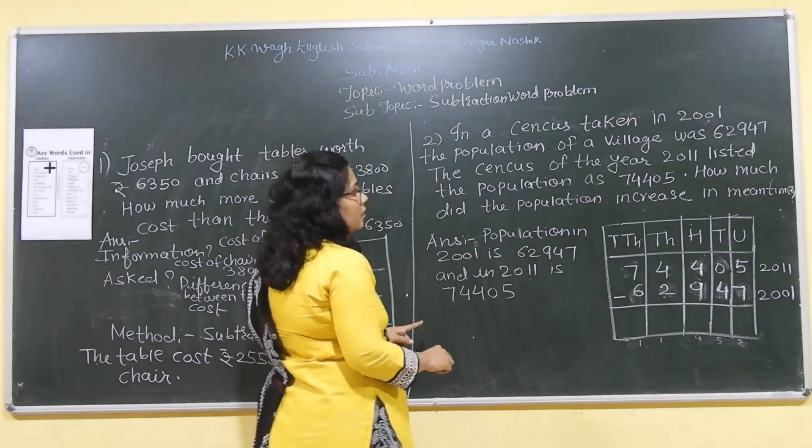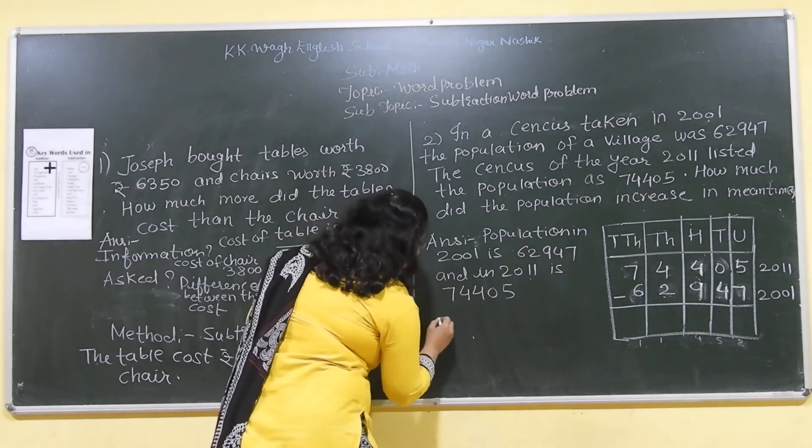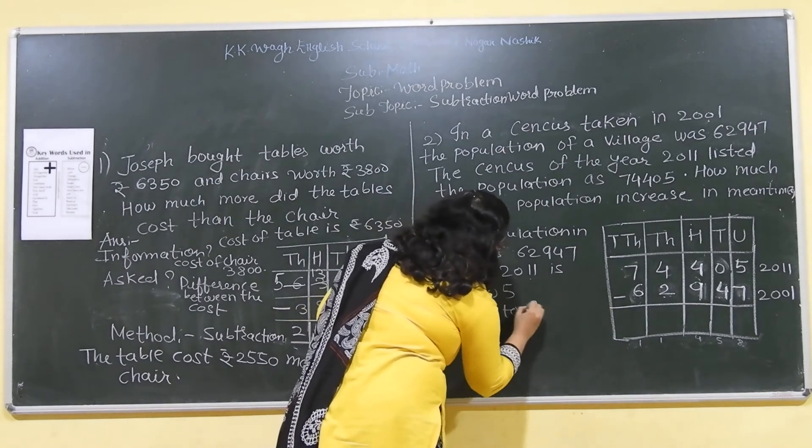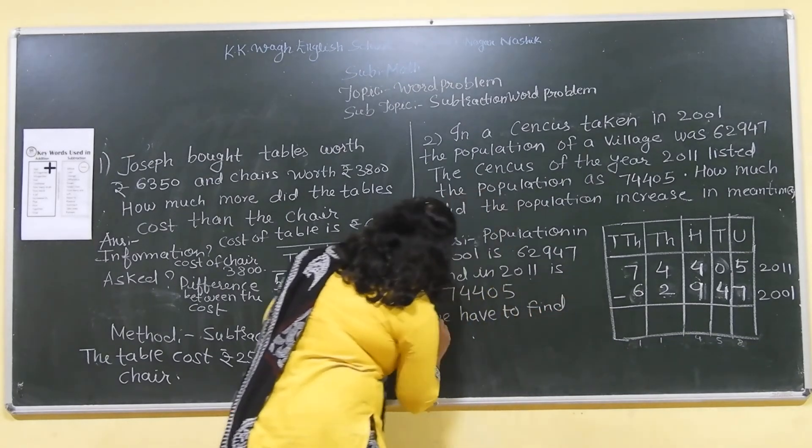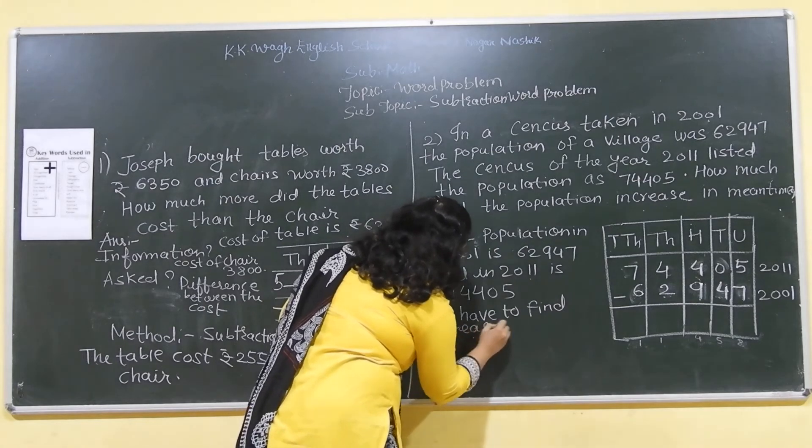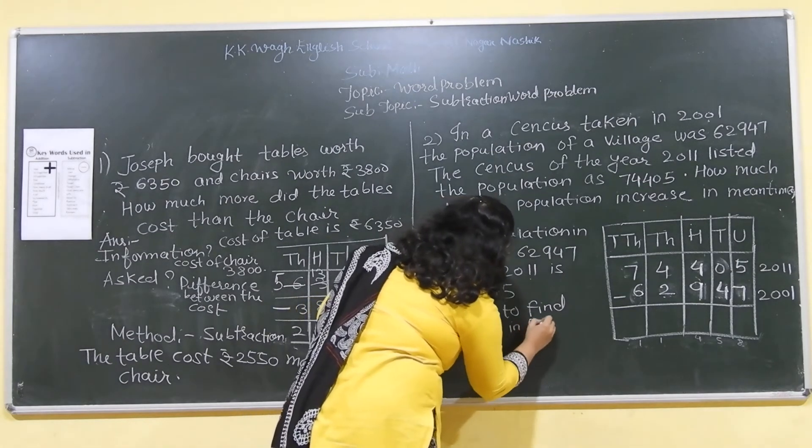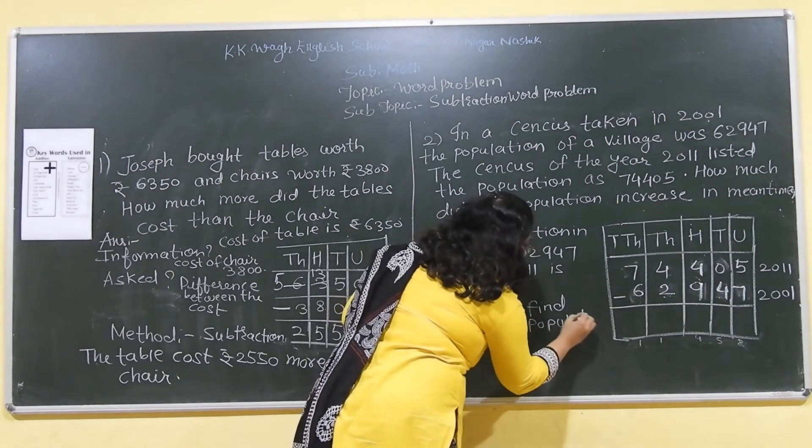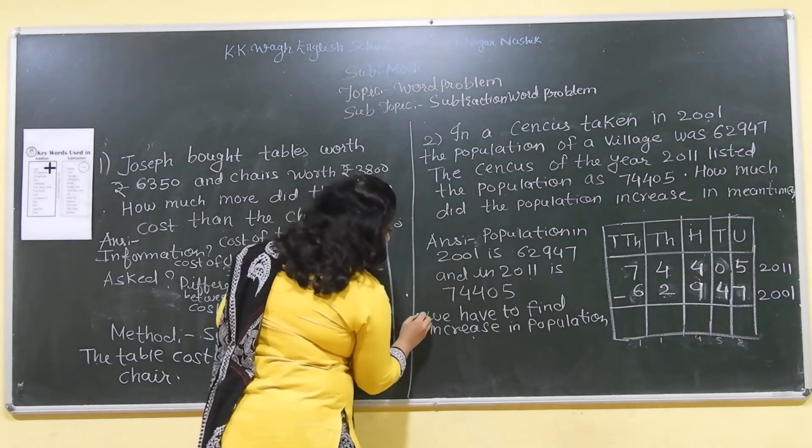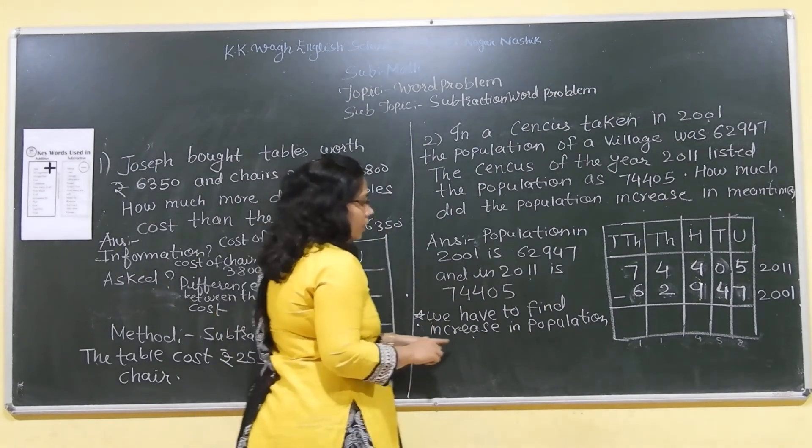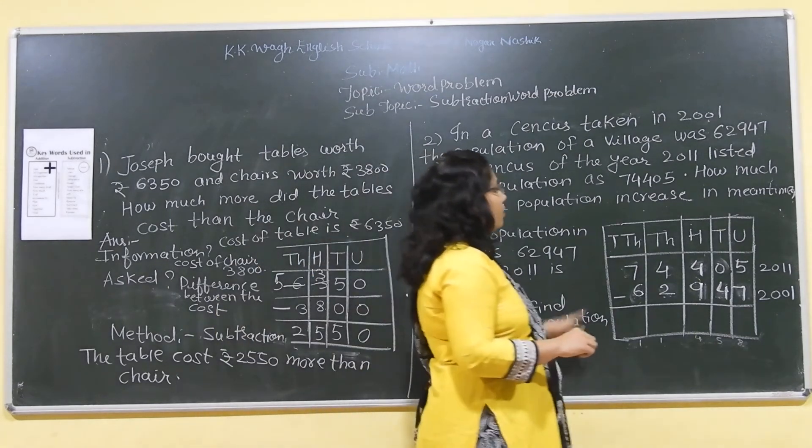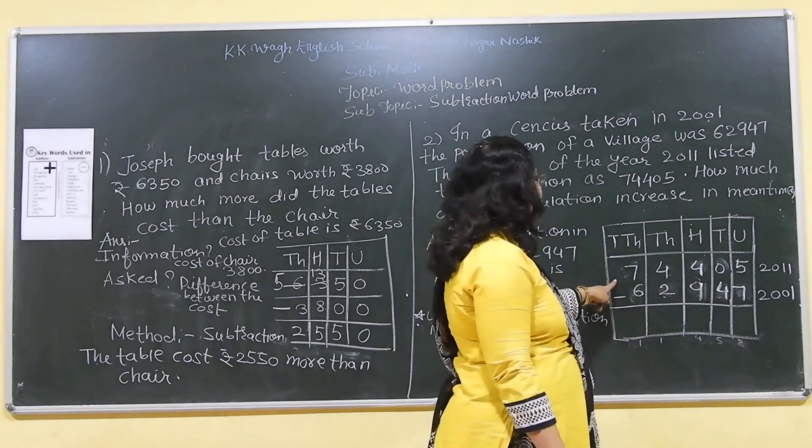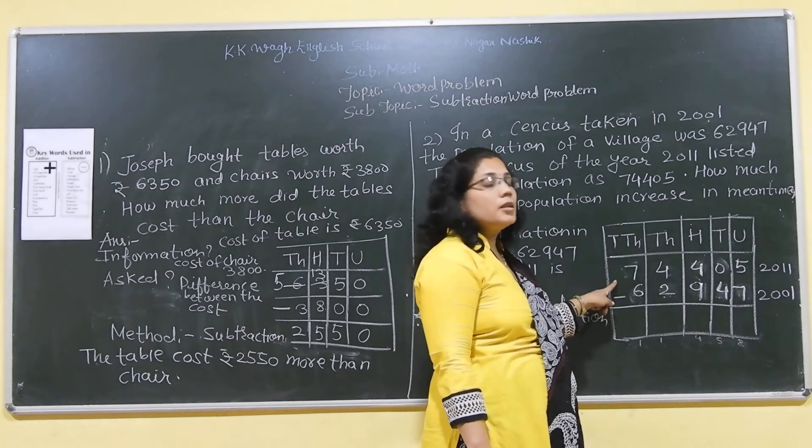So, what is asked, the population increase, we have to find increase in population. Okay, we have to find increase in population. So, we have placed this in this way and I have already told you that we have to subtract always smaller number from bigger number.